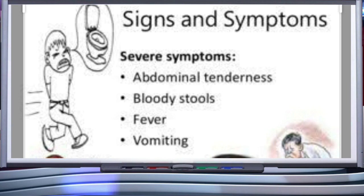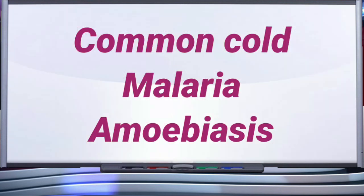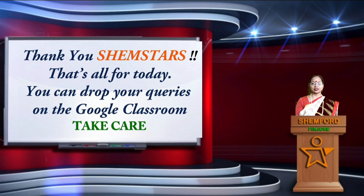Symptoms of amoebiasis include abdominal pain, constipation, cramps, and feces with excess mucus and blood clots. House flies act as mechanical carriers and transmit the parasite from feces of an infected person to food and food products, thereby contaminating them. Drinking water and food contaminated by fecal matter are the main sources of infection. This is all about common cold, malaria, and amoebiasis. Thank you Sham Stars — drop your queries on Google Classroom. Take care.